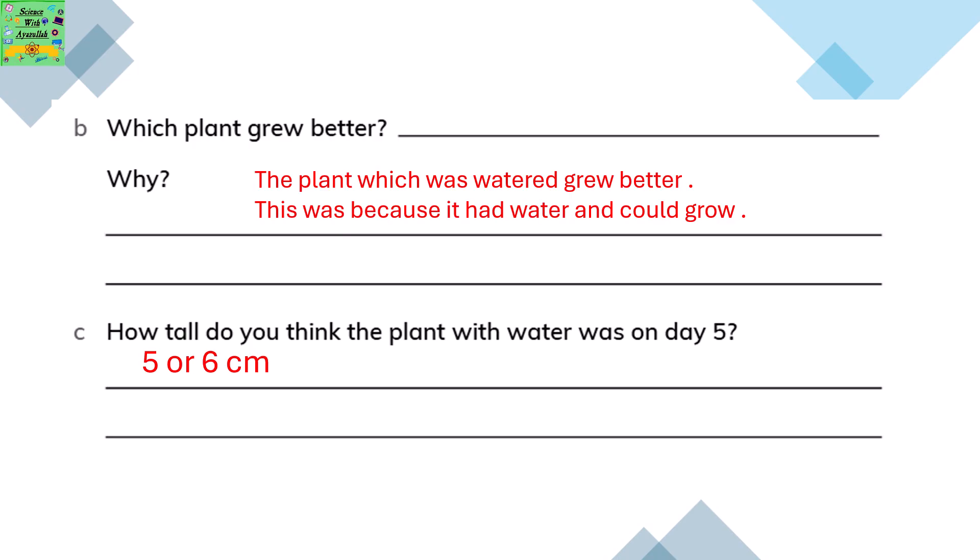Which plant grew better and why? The plant which was watered grew better. This was because it had water and it could grow well. How tall do you think the plant with water was on day 5? It could have been 5 or 6 cm on day 5.